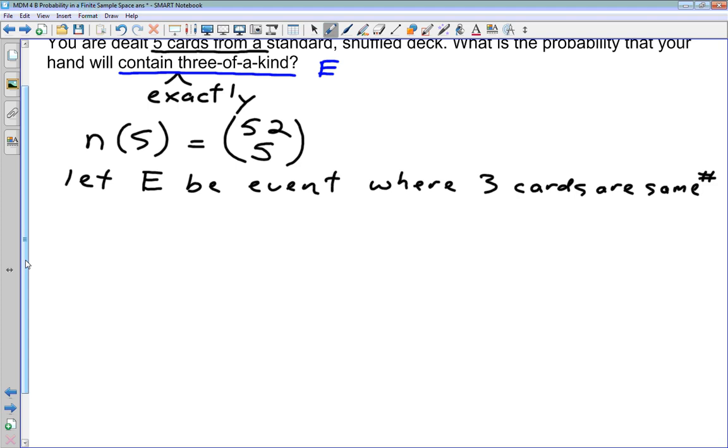You could have an event that you called E_A for event aces. And this could be the event where you have three aces in your hand.